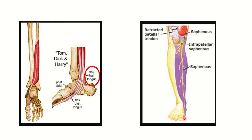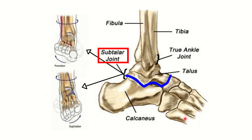In this picture we can see the subtalar joint — this is the calcaneus, this is the talus, and the navicular. This calcaneotalar navicular joint is the subtalar joint. Inversion and eversion occur at this point — the subtalar joint. So inversion and eversion occur at the subtalar joint.